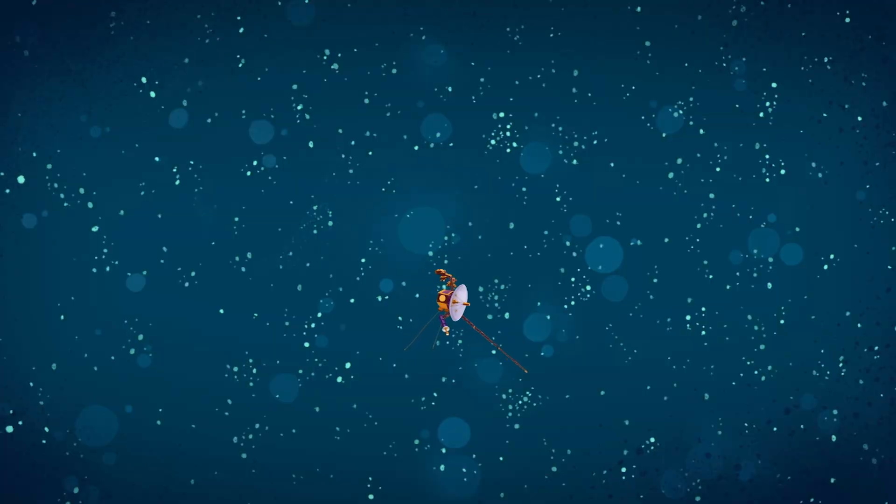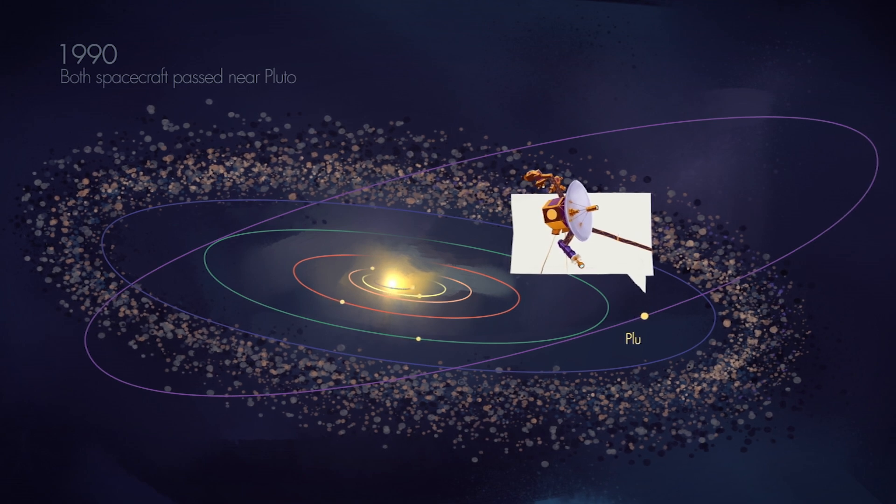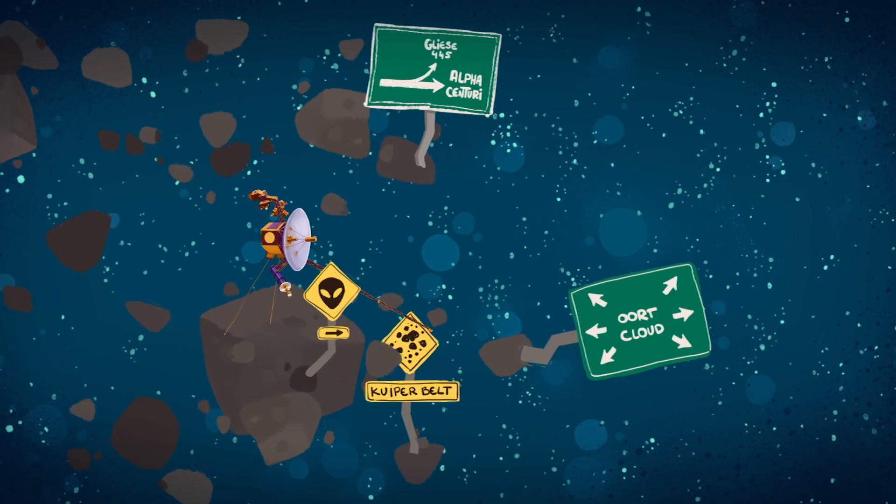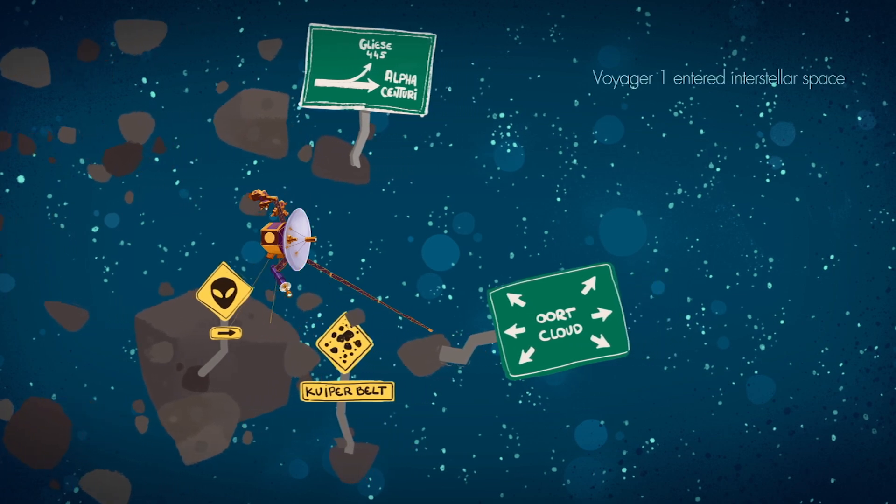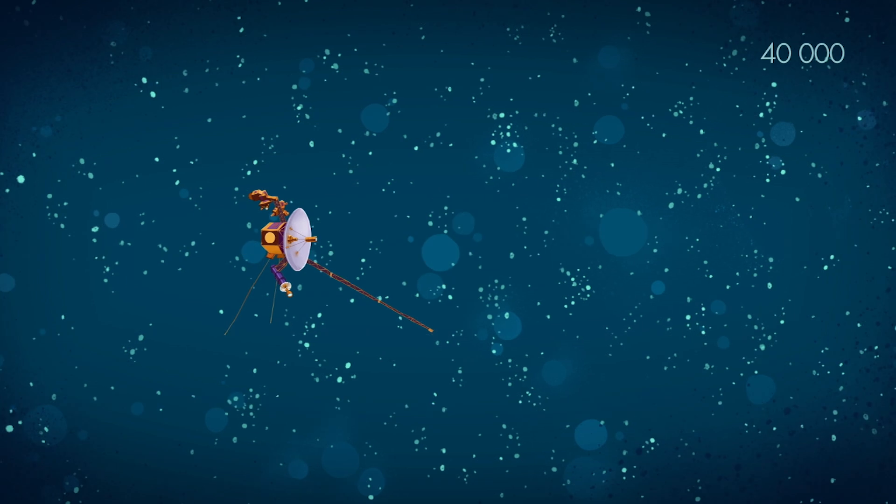Meanwhile, the golden records continue their journeys. In 1990, both Voyager spacecraft passed beyond the orbit of Pluto. Voyager 1 entered interstellar space in 2012 and will reach the nearest stellar system in 40,000 years.